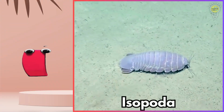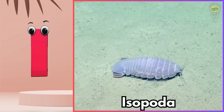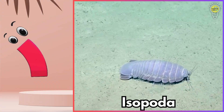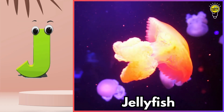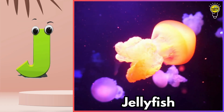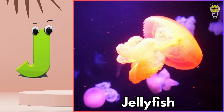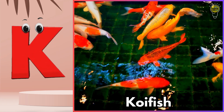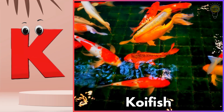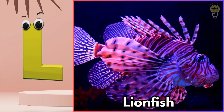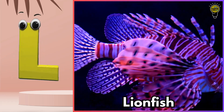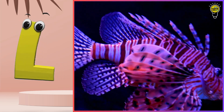I is for isopod. Ih, isopod. J is for jellyfish. Juh, jellyfish. K is for koi fish. Kuh, koi fish. L is for lionfish. Luh, lionfish.